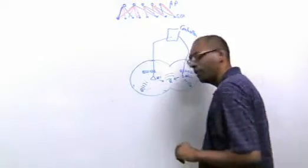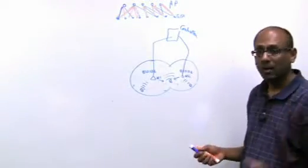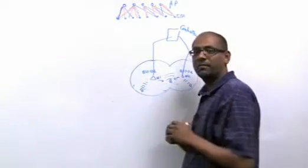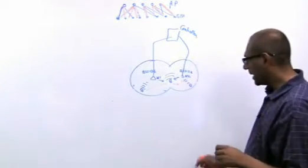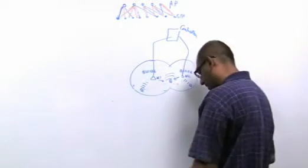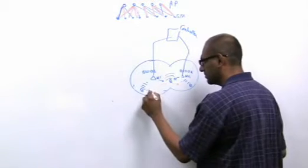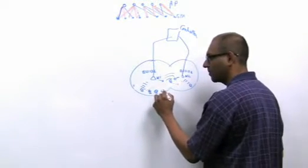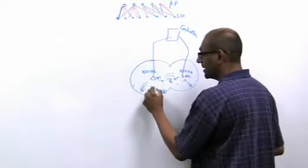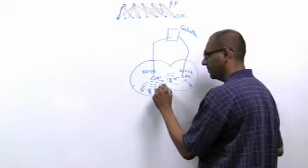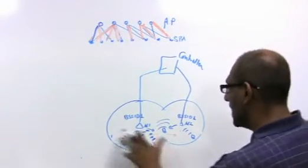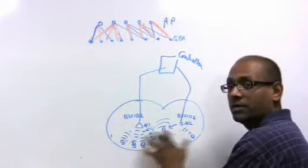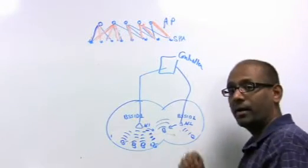So this is the basic idea of what we call virtual cell. All the access points advertise the same BSSID. Now notice that whether you have one client or multiple clients, they all connect to the same BSSID. So the good news here is that as any one of these clients moves or all of these clients move, they are transparently handed off.